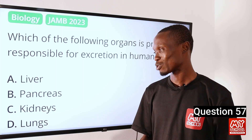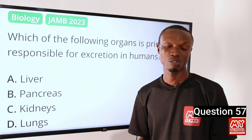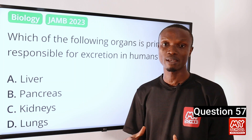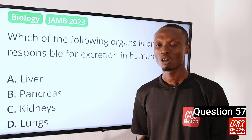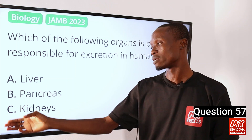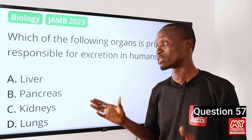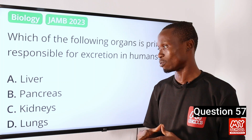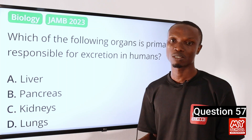The answer to this question is option C — kidneys. Kidneys are the major excretory organs in humans. They filter waste products, excess ions, and water from the blood to produce urine, which is then removed from the body. Options A and D — liver and lungs — are also part of the excretory system in humans, but they are not the major excretory organs. So that makes option C the correct option.